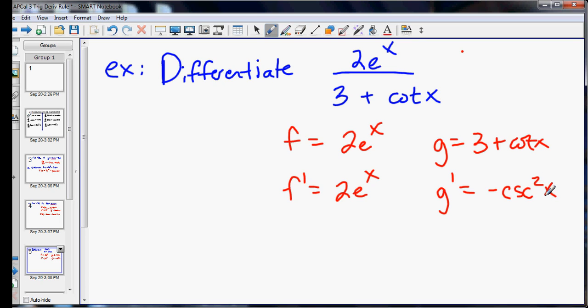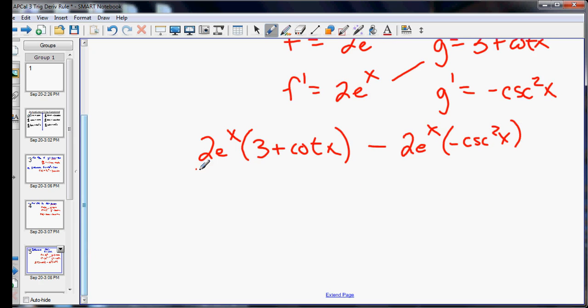And then we just apply the rule, like we have before. f prime times g, minus f times g prime, all divided by g squared.